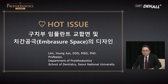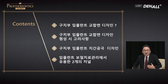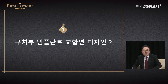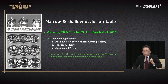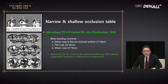Let me get started with the story of the Posterior Implant Occlusal Plane and Embrasure Space Design. These are the contents: occlusal plane for posterior implant, and designing of the plane. Two things need to be considered. First, the occlusal table itself should be narrow. According to the paper, steep cusp and narrow occlusal surface is favorable to receive less occlusal force.